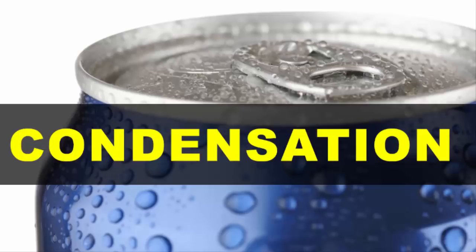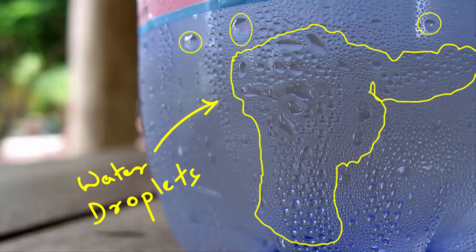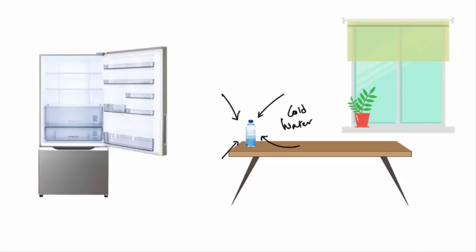A very simple form of condensation is, get a bottle of cold water from the fridge, keep it outside for some time, you'll see water droplets start to form on the outer surface of the bottle. So what do you think is happening? Since the bottle has cold water inside, naturally the bottle itself will be cold.